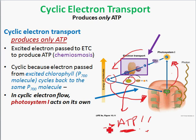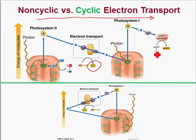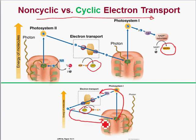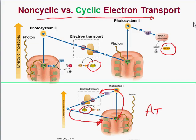Comparing the two side by side: the non-cyclic flows in a straight path — photosystem 2, electron transport chain, photosystem 1 — creating ATP in the electron transport chain and NADPH at the end. The cyclic has the electron leaving photosystem 1, traveling through the electron transport chain making ATP, then returning to the same photosystem. Non-cyclic produces both ATP and NADPH; cyclic produces only additional ATP for sugar production.